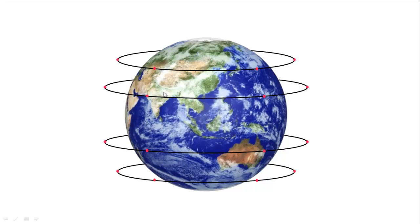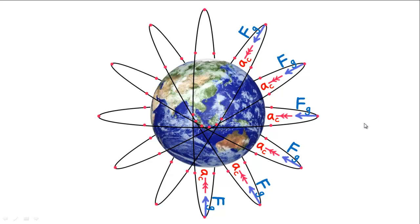For circular motion, satellites need a net force that's directed towards the center of the circle. But the Earth can only pull the satellites towards the center of the Earth. That's why all satellites with circular orbits must be centered about the Earth's center.